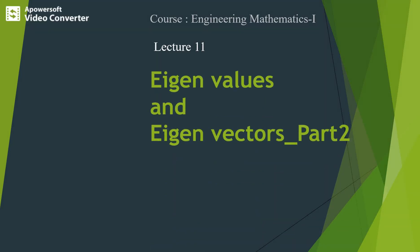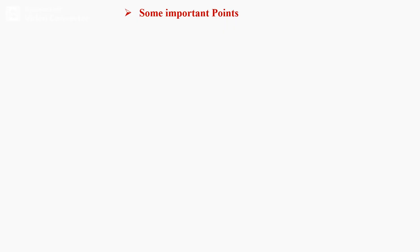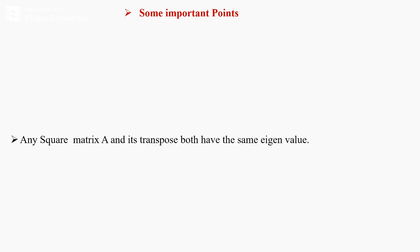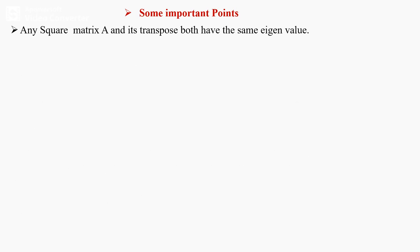Lecture 11: Eigenvalue and Eigenvector, Part 2. In this lecture we discuss some properties of eigenvalues and eigenvectors. The first property: any square matrix A and its transpose both have the same eigenvalues.